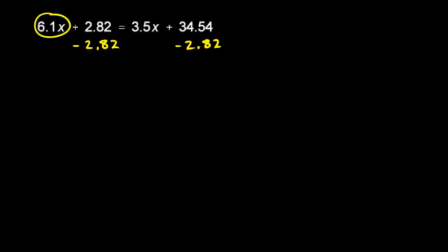That's going to leave these x terms unchanged. But right here, this 2.82 and the negative 2.82, those add up to zero, so they effectively cancel each other out. That leaves me just with the 6.1x on the left. I'll write that 6.1x.